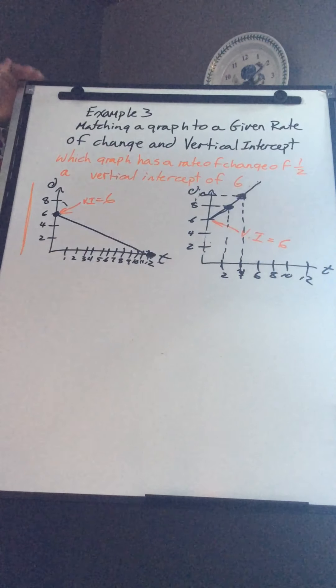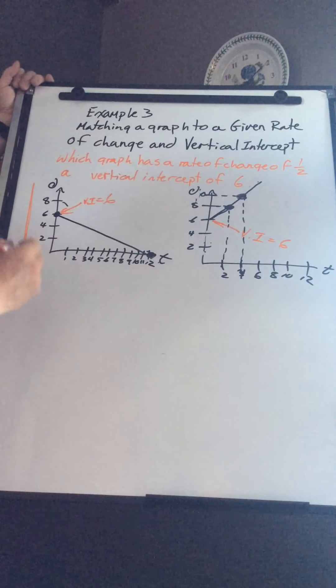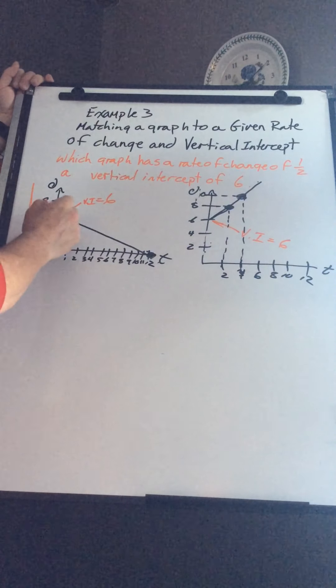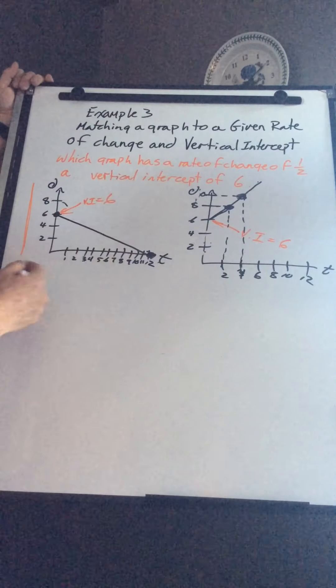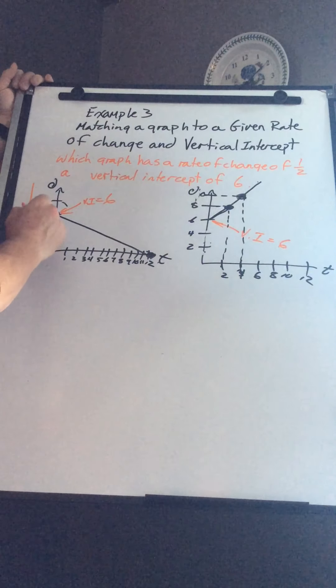Now we need to figure out the rate of change. The rate of change for this one, I have two points here. I have one here and here. I'm using different points than what the textbook is, so it's a good chance to see something.